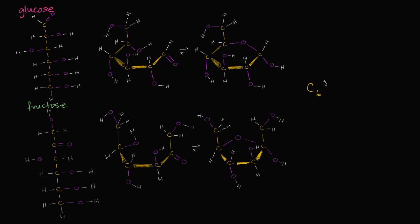They both have 12 hydrogens, and to round it all out, they both have six oxygens. So they have the same chemical formula, but they are different molecules. That makes them isomers. And as we will see, they are structural isomers — the constituent carbons, hydrogens, and oxygens are bonded in a different way, which makes them structural isomers.